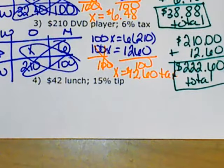Let's look at number four. It's a $42 lunch with a 15% tip.